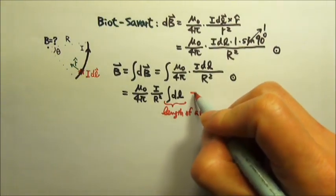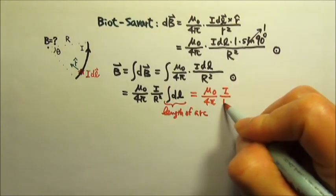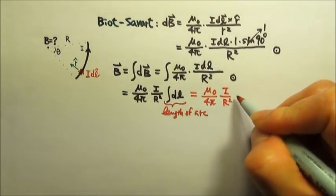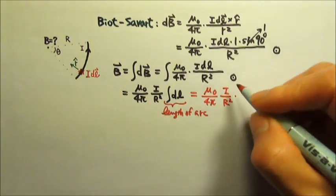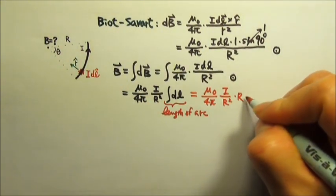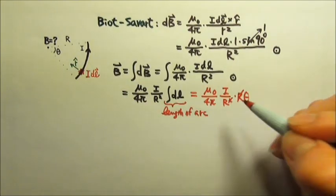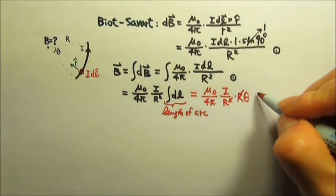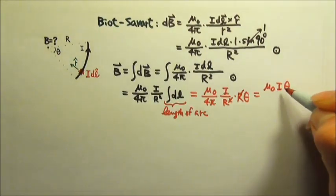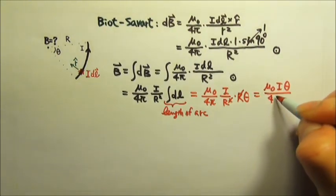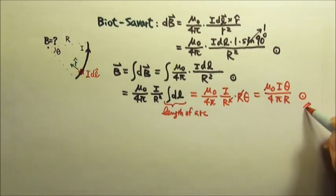So this is mu naught over 4π times I over R squared. The length of the arc would be R times θ, so this is R times θ. And then we can cancel one of the Rs, and then we'll get mu naught I θ over 4π R. And that's out of the paper.